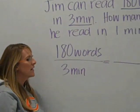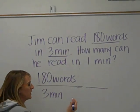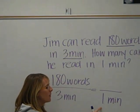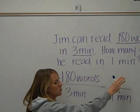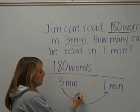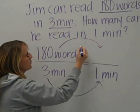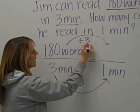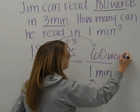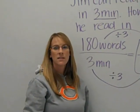To find the unit rate, we are going to find how many words he can read in one minute. The one in this unit rate will be in the denominator, because minutes to minutes and words to words. So we have to go from three to one by dividing by three, and then do the same thing to the numerator — divide by three. 180 divided by three is 60 words. So Jim can read 60 words in one minute, and that's your unit rate.